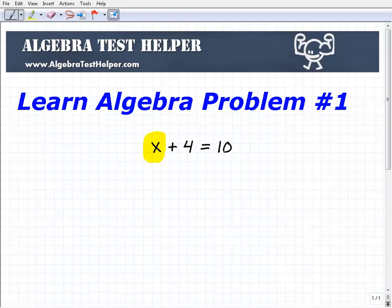So I have x plus 4 equals 10. I want x by itself. So to do this, I'm going to go ahead and subtract 4 from the left-hand side. Because I don't want that 4, I'm going to subtract it away.